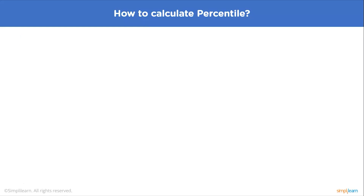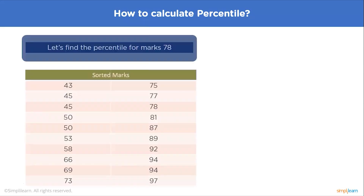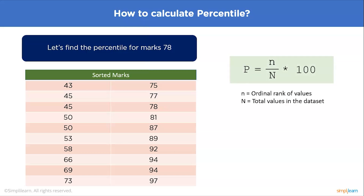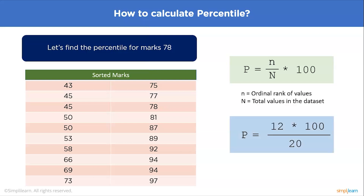There is another way to calculate the percentile. Suppose we want to find at what percentile the mark of 78 falls. The formula is: P = (n / N) × 100, where n is the ordinal rank of the value and N is the total number of values in the data set. Substituting the values, we get (12 × 100) / 20 = 60. So the 78 mark is at the 60th percentile in the data set.